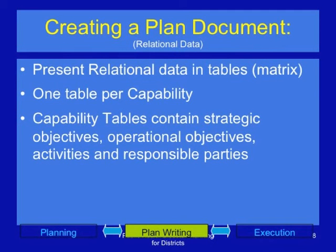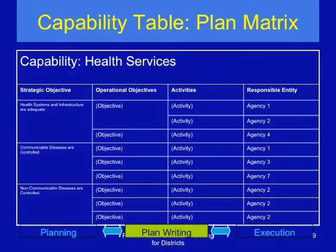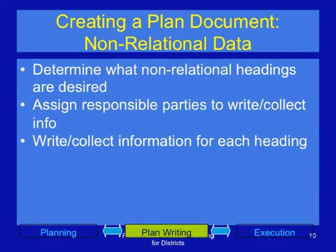The capability tables contain strategic objectives, operational objectives and activities, responsible parties, and the times and budgets. In this session, we are mainly concerned with non-relational data. Determine what non-relational headings are desired and assign responsible parties to write or collect information on these non-relational items — that is, the background information.